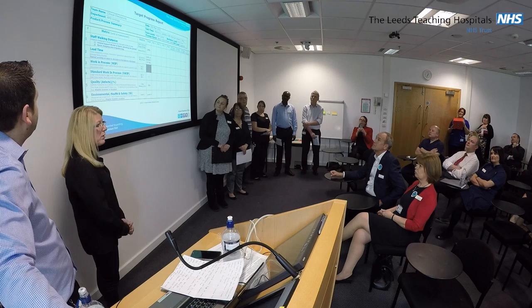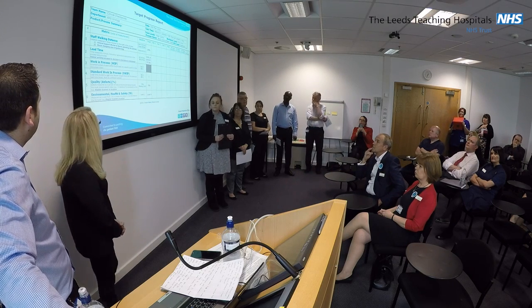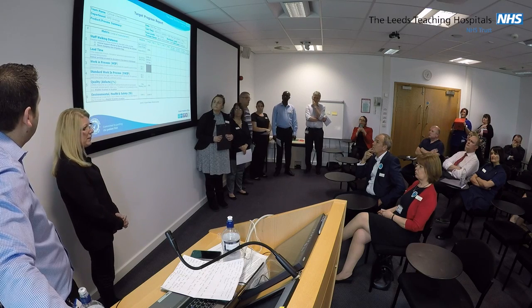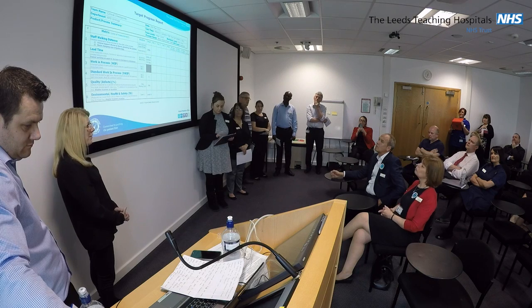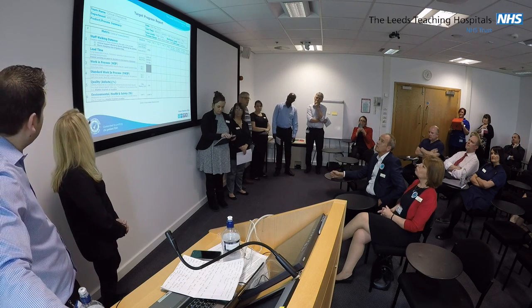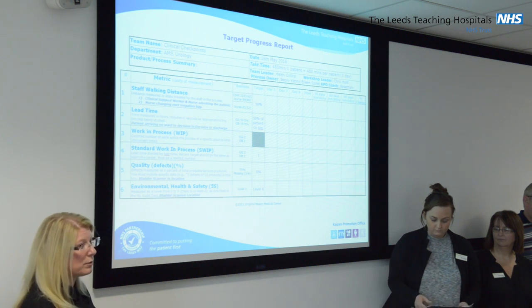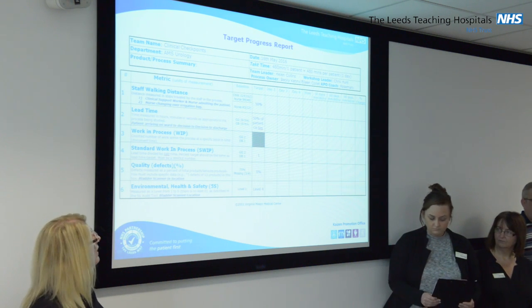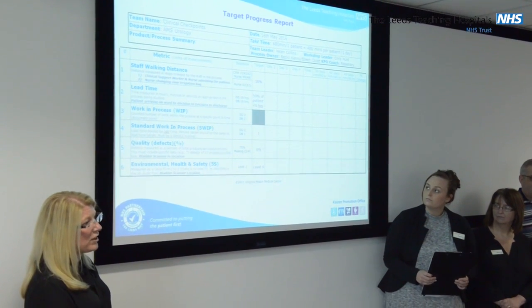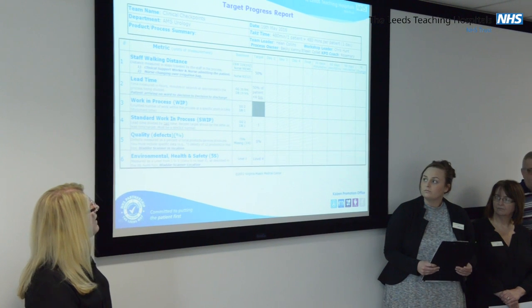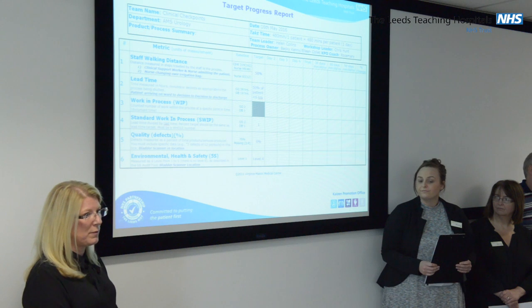We need to know how we're going to measure our progress, so we used a target progress report. We started with a baseline and looked at six key elements. The first element is staff walking. We looked at the clinical support worker and the nurse admitting the patient. The CSW walked 319 steps, the nurse walked 99. For changing an irrigation bag, it was 83 steps, and we set a target of reducing those steps by 50%.